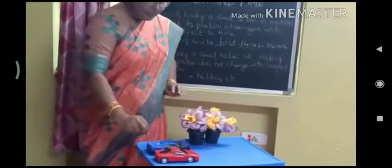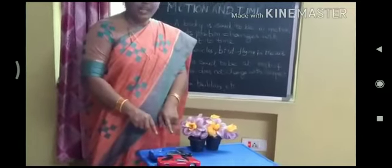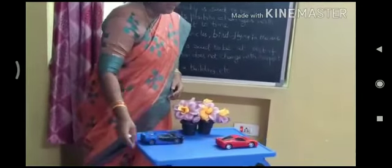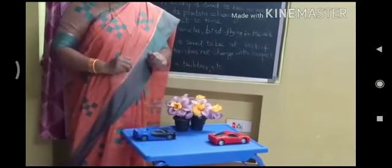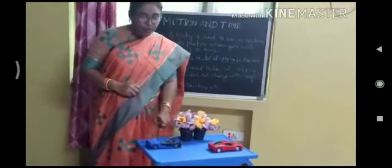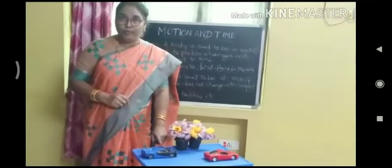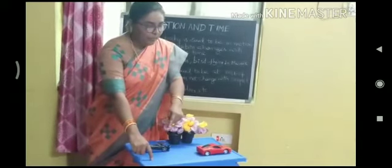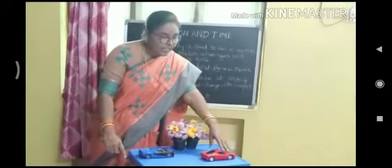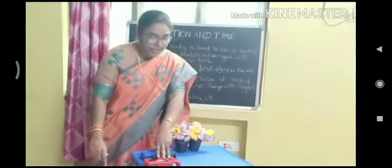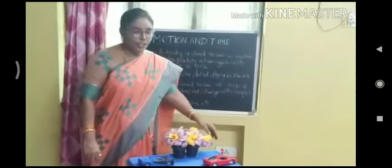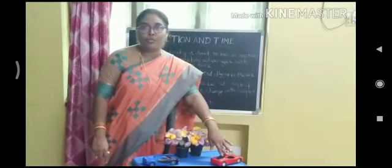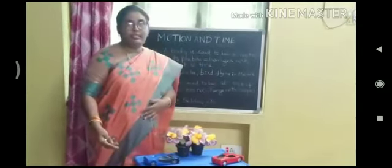Now suppose that in case one, the blue car and red car are at rest. Now this red car is moving. What change did you observe here? There is no change in the position of the blue car, whereas the red car has changed its position from here to here. This means the red car has been displaced — it has changed its position. We call this: the red car is in motion.